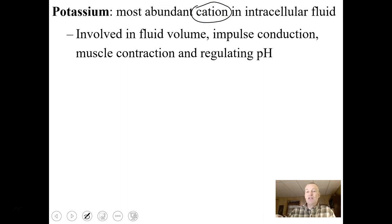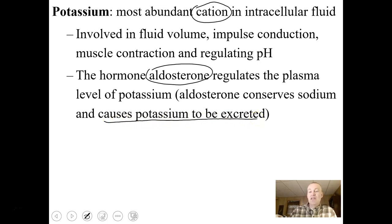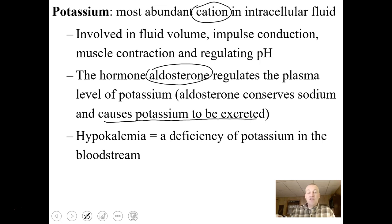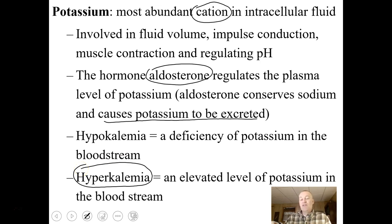Potassium is the most important cation in intracellular fluid. It's involved in fluid volume, impulse conduction, muscle contraction, and regulating pH. Aldosterone regulates plasma potassium levels — it conserves sodium but causes potassium to be excreted. Hypokalemia is a deficiency of potassium; hyperkalemia is an elevated level. Hyperkalemia after a venomous snake bite suggests massive blood cell destruction releasing potassium into the bloodstream, which can be potentially fatal.